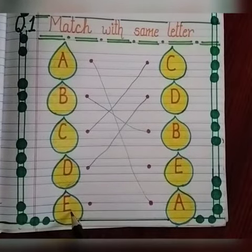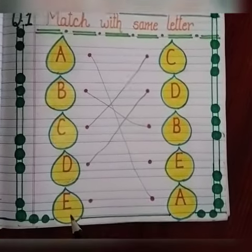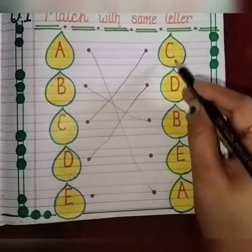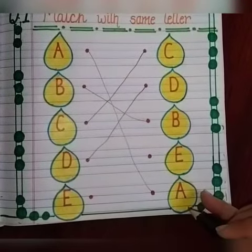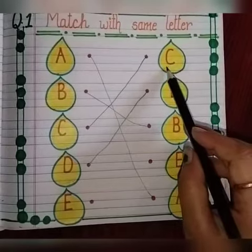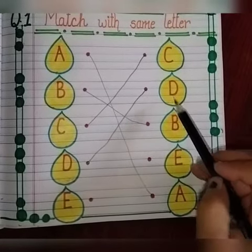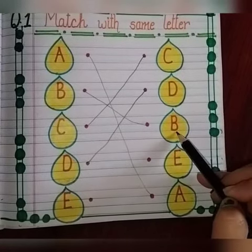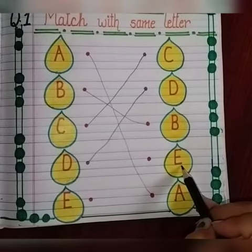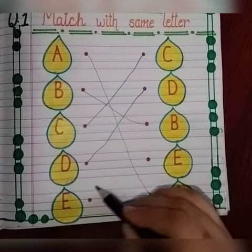Which letter is this? It is E. E says Eh. And where is letter E in this row? No. No. No. Yes, it is E. Match with it.